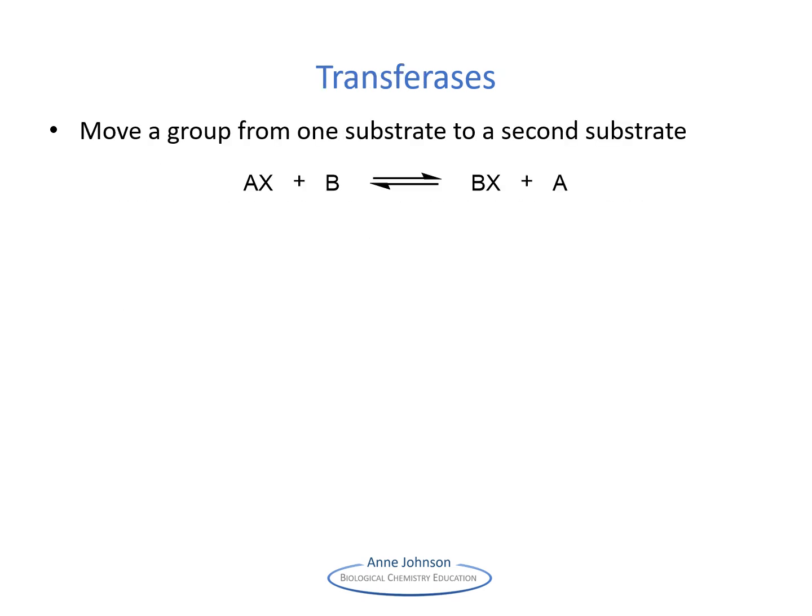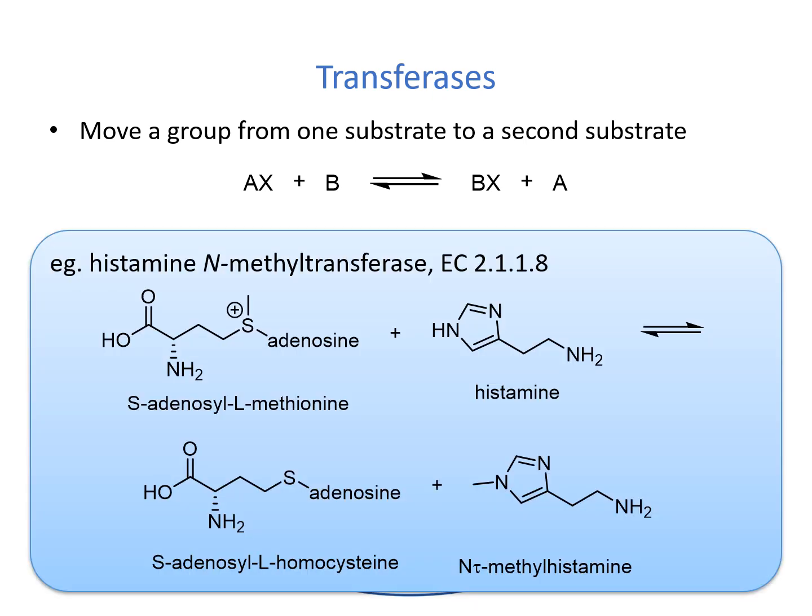The transferases catalyze transfers of a group from one substrate to another. Transfers of hydrogen and oxygen are not included in this group. Common types of enzyme belonging to this group are kinases and transaminases. In this example, a methyl group from S-adenosylmethionine (SAM) is transferred to the tau nitrogen of histamine.